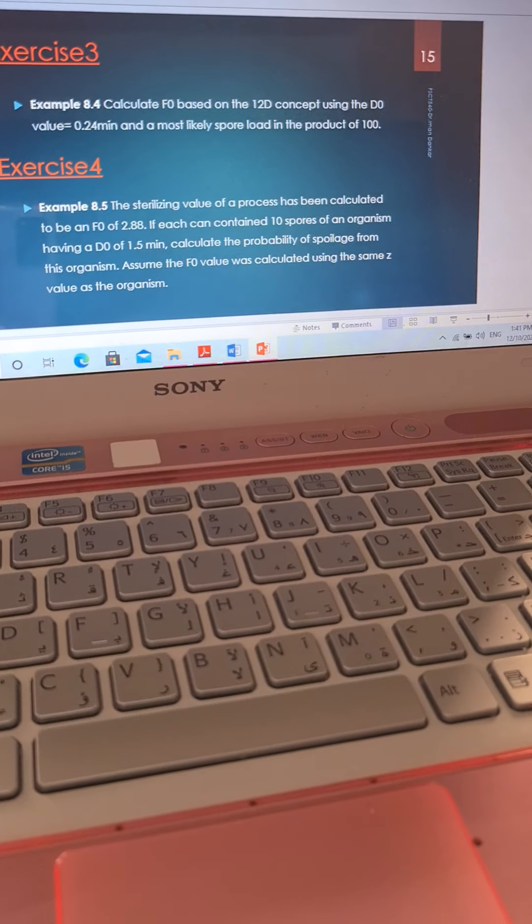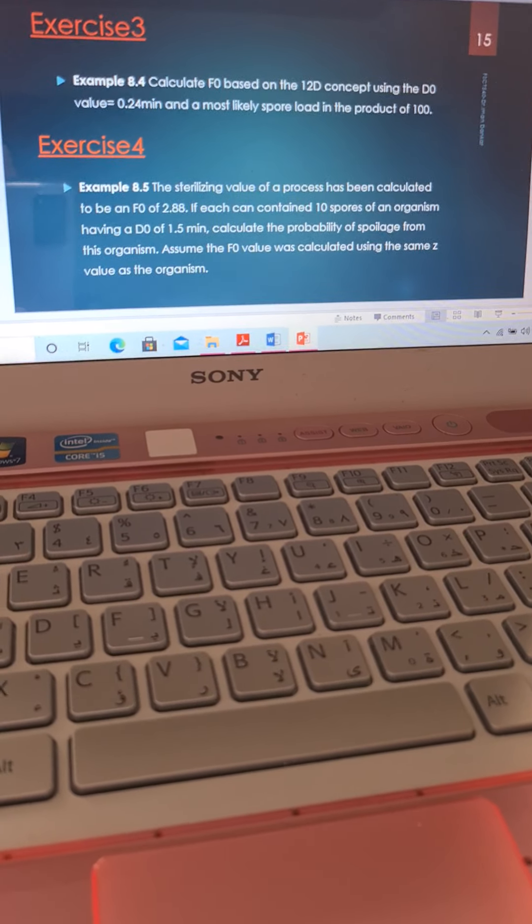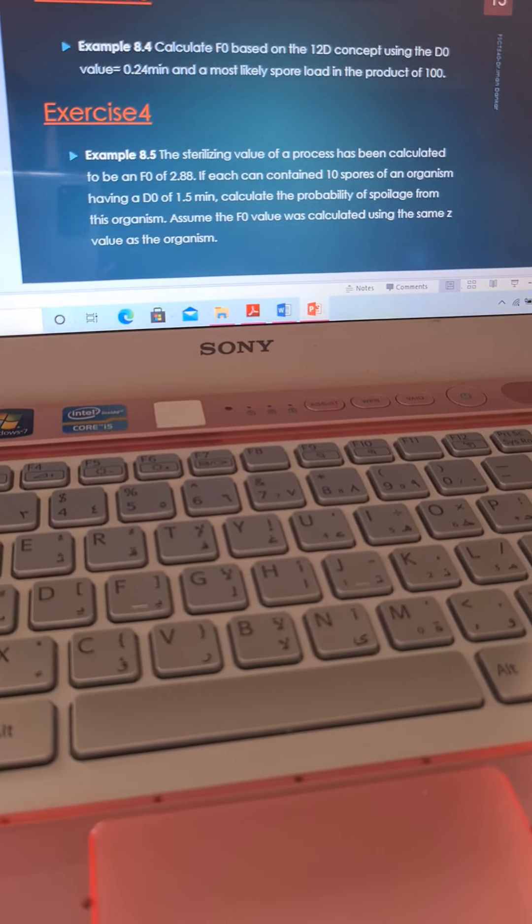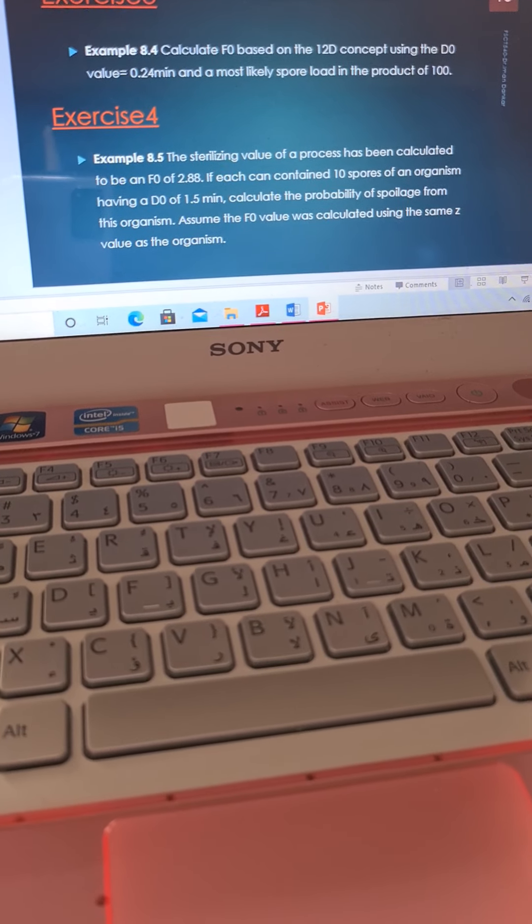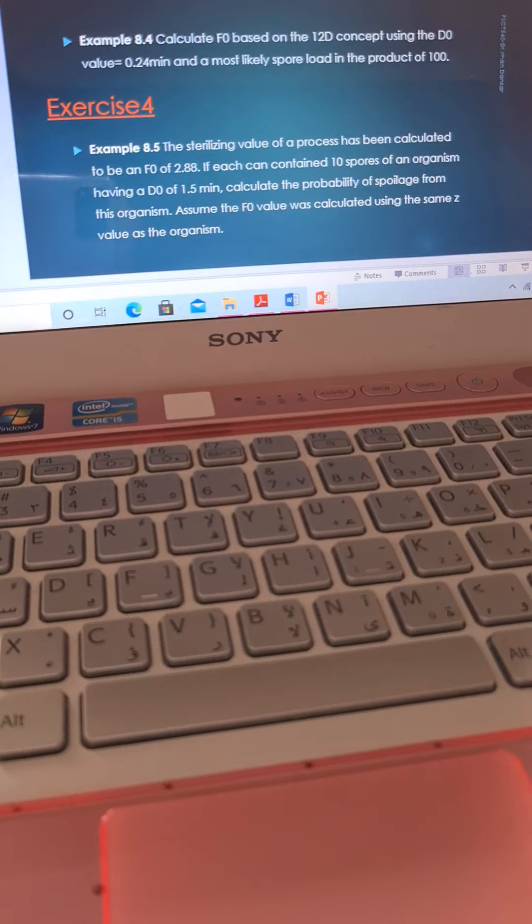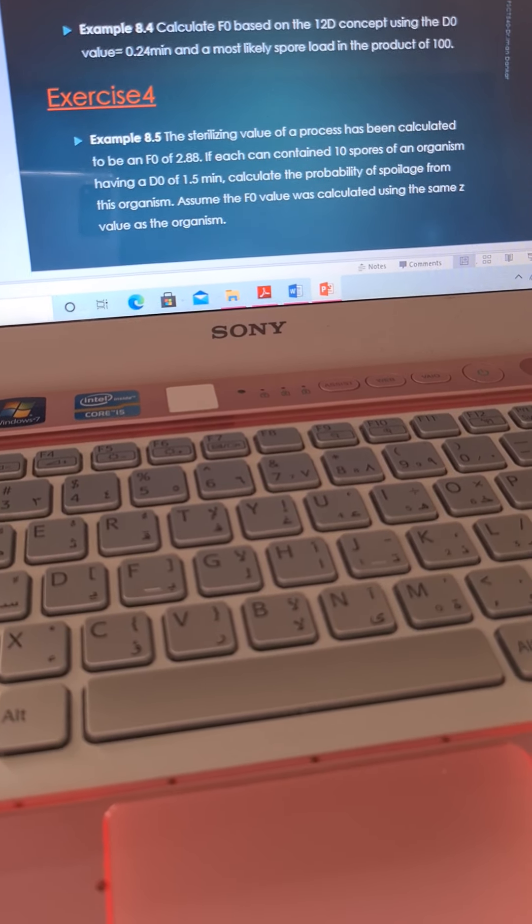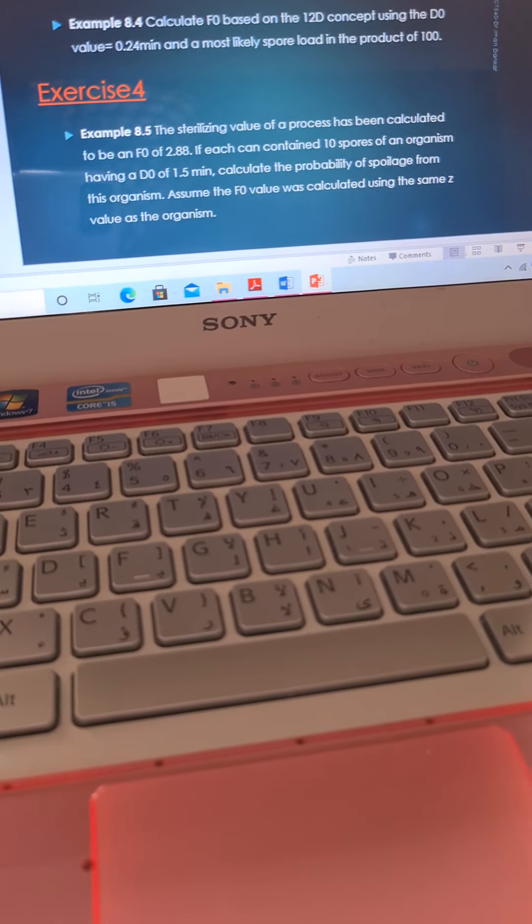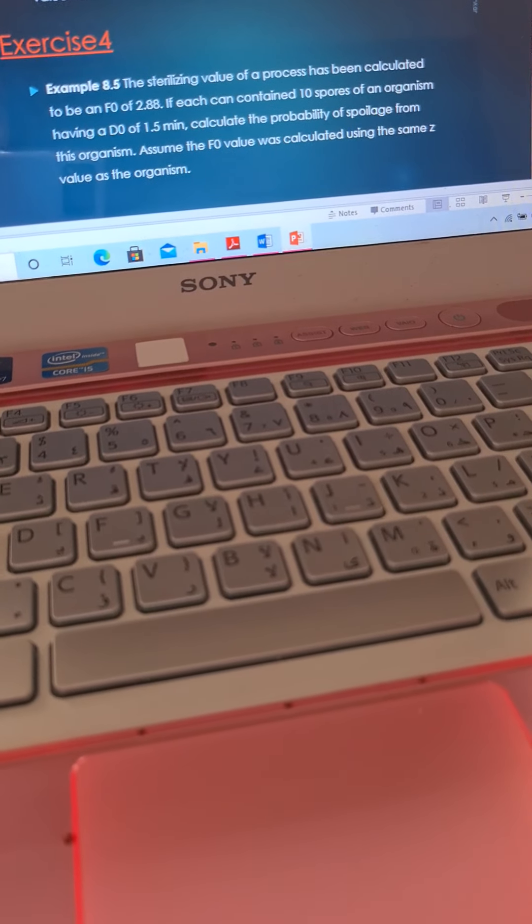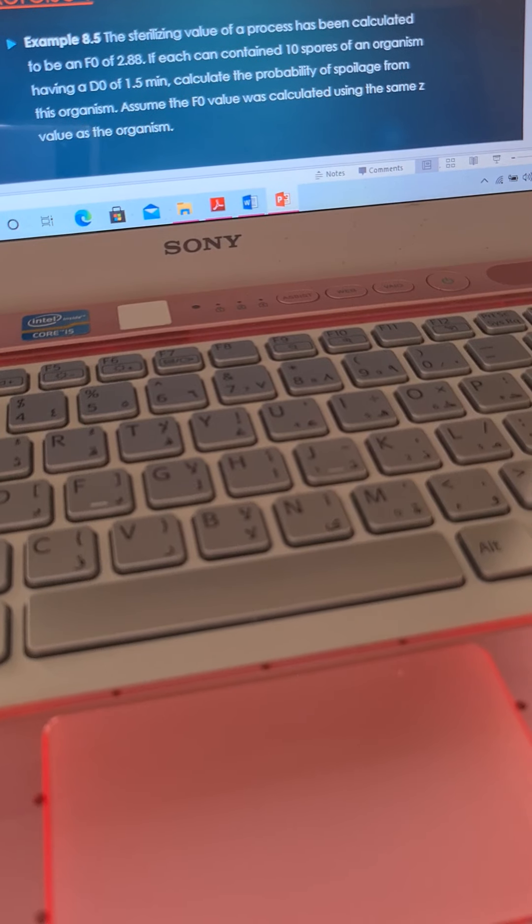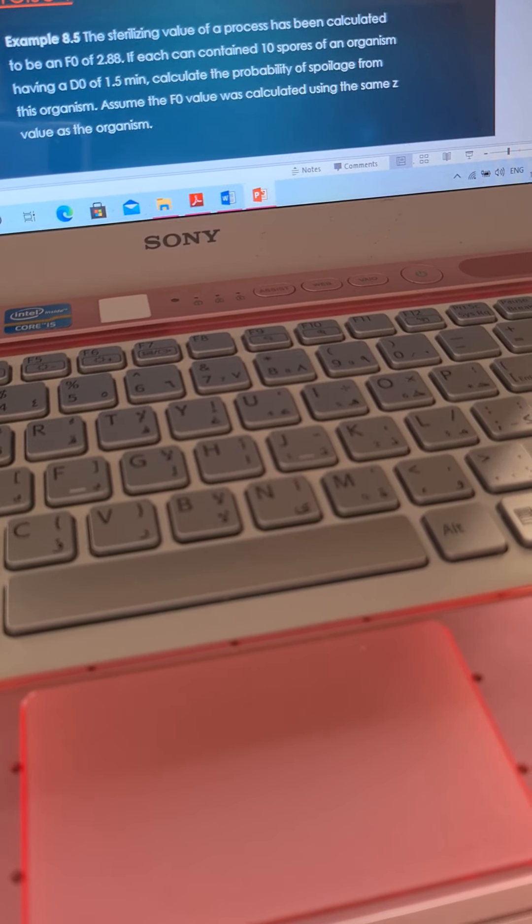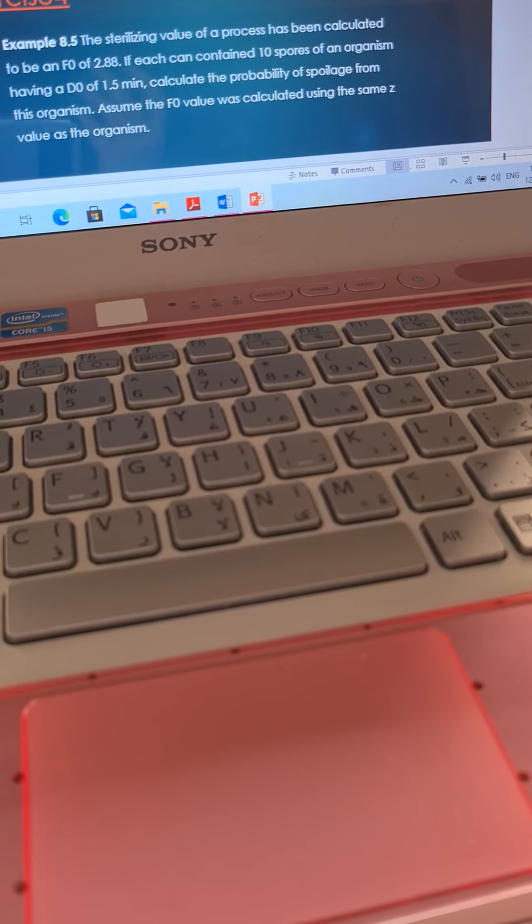What equation are we going to use in this case? We are going to use the equation of log N over N0 equals minus T over D. Because we have the number of N0. And we've got the D value with us. And we've got the T value, which is the F value. Because F is the time for the lethality to be viable.